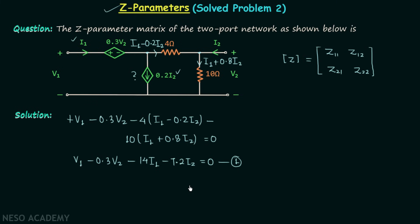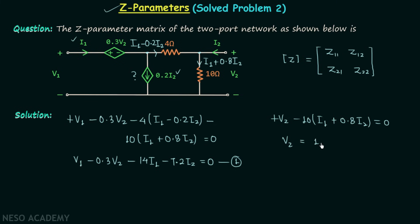Now we find the output KVL equation by applying KVL in the output loop. We get: V2 minus 10·(I1 plus 0.8·I2) equals 0, which gives V2 equals 10·I1 plus 8·I2. We call this equation number 2.